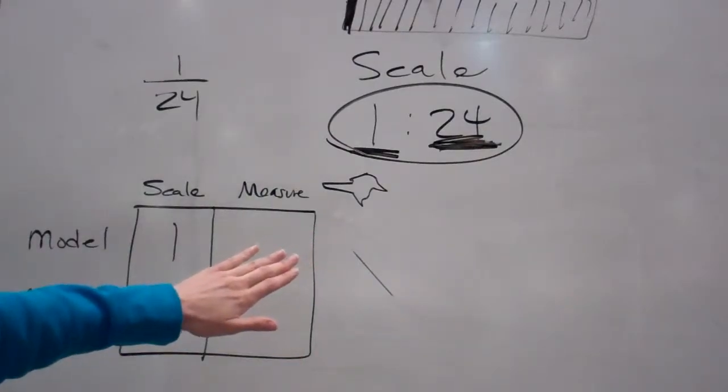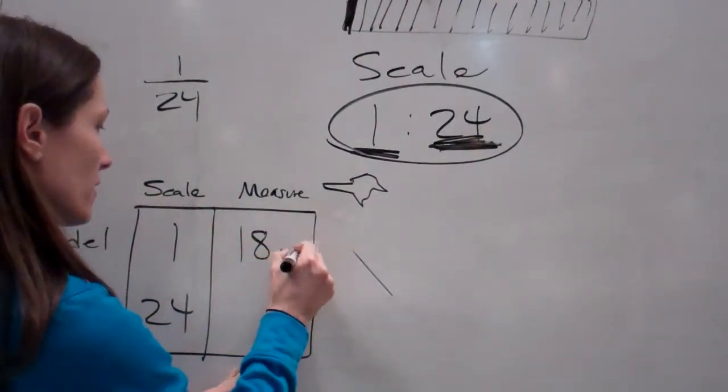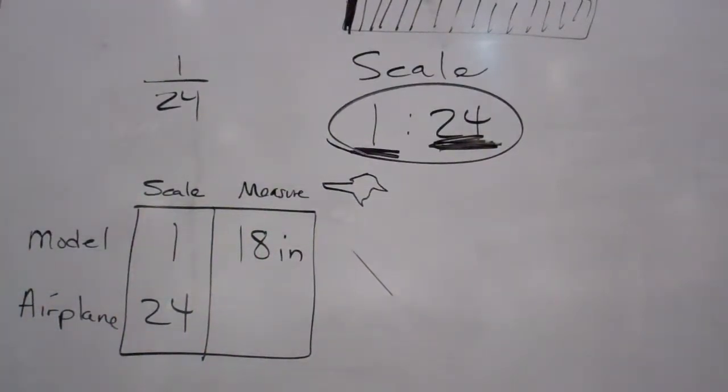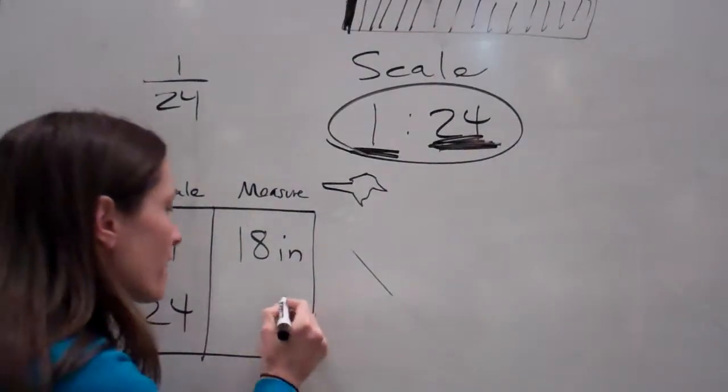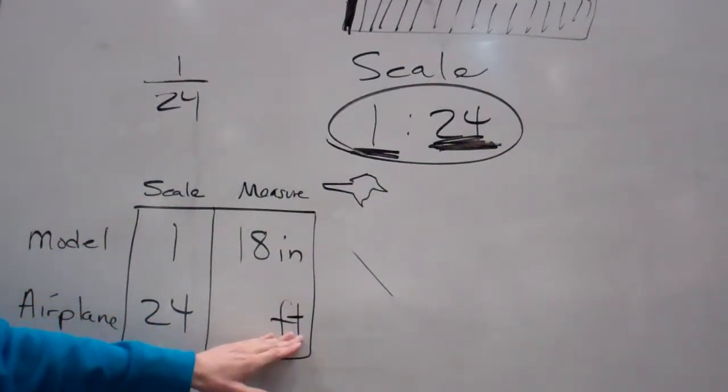And then it tells me this. If the wingspan of the model is 18 inches, the wingspan of the actual airplane is how many feet? Problem, again, inches, and they're wanting feet here.